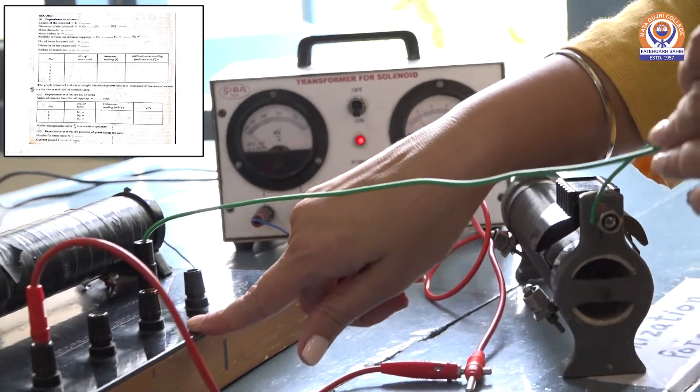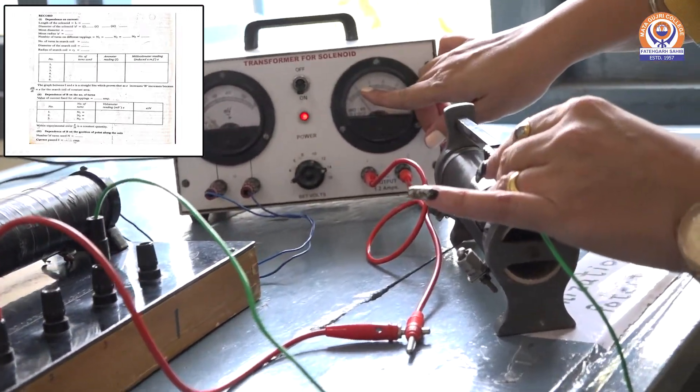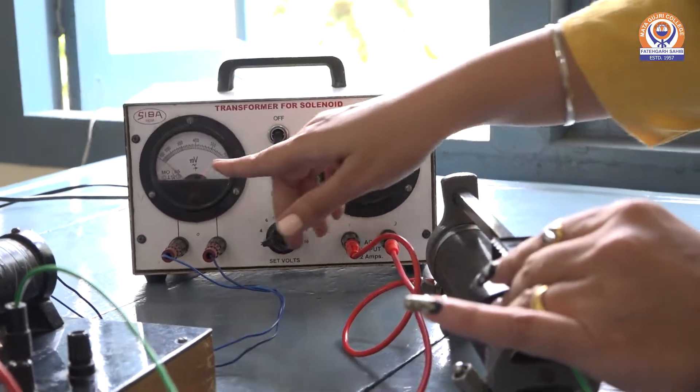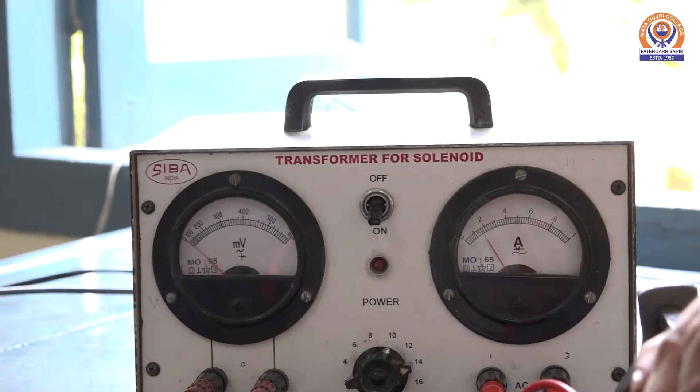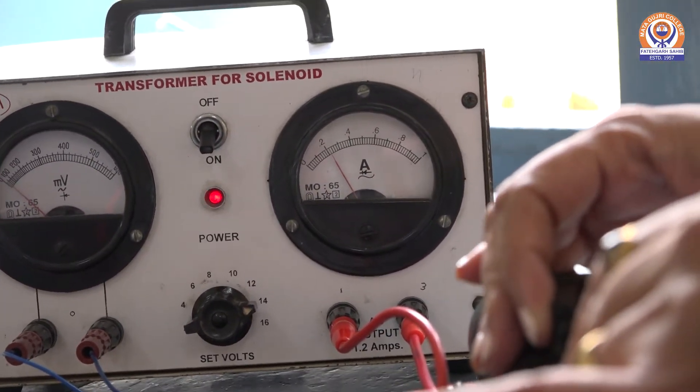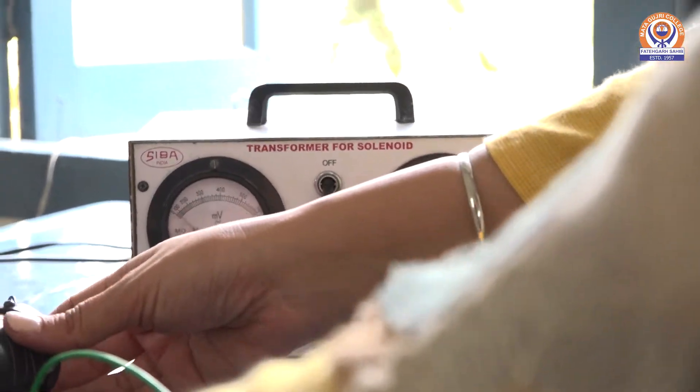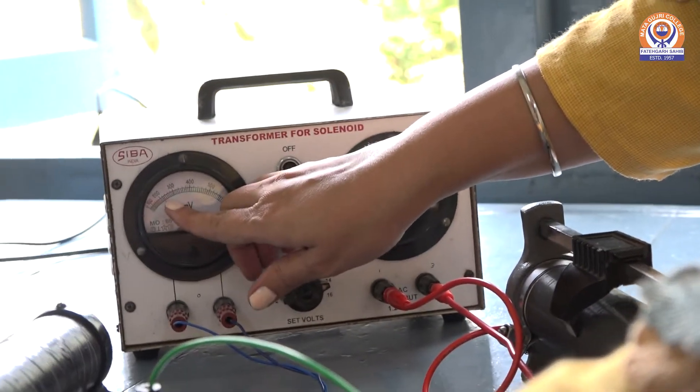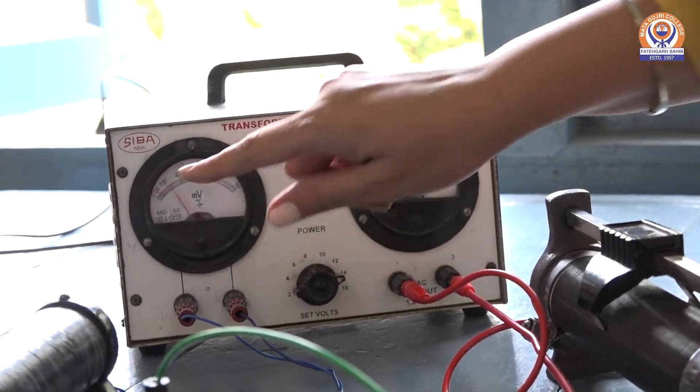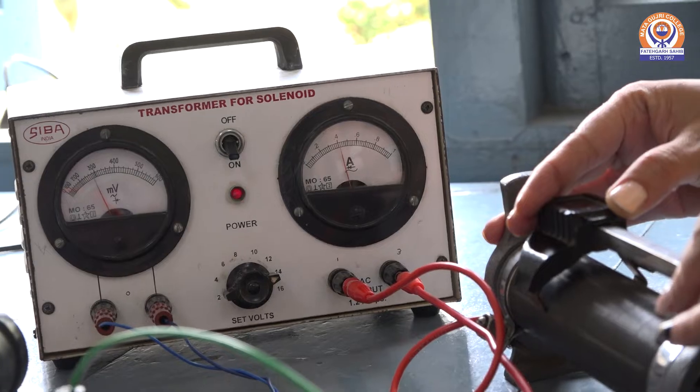I have connected number of turns at 440 and I am changing the current to 0.2. This is around 20 millivolt. When I increase the current to 0.3, the induced EMF is increased to 200 millivolt. When I further increase the current to 0.4, the induced EMF is up to 300 millivolt.